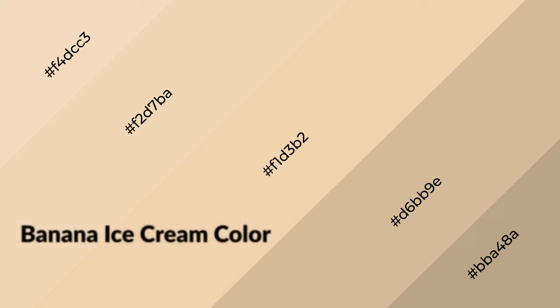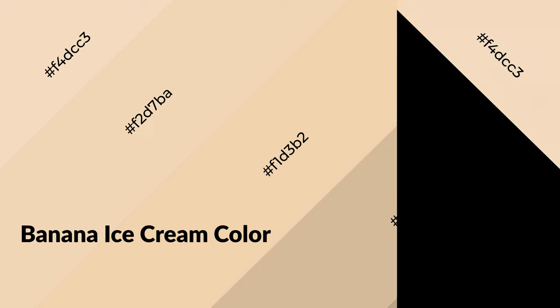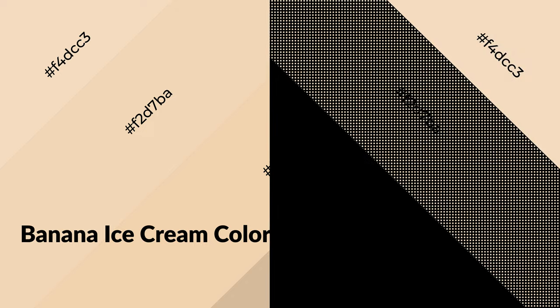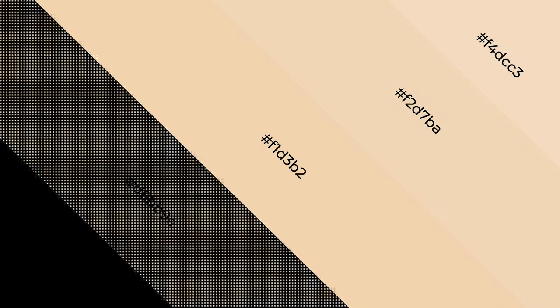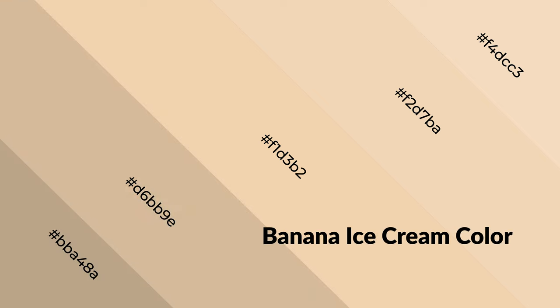Banana ice cream is a warm color and it emits cozier and active emotions. Warm colors are symbols of warmth, fire, heat, and sunshine. It also evokes joy, passion, love, and even anger. You can see these colors used in restaurants and gyms.